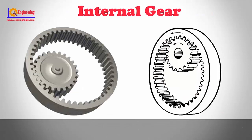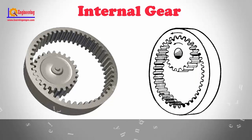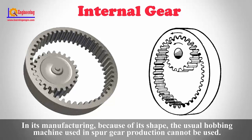An internal gear is a gear with its teeth cut in the internal surface of a cylinder and meshes with spur gears. In its manufacturing, because of its shape, the usual hobbing machine used in spur gear production cannot be used.